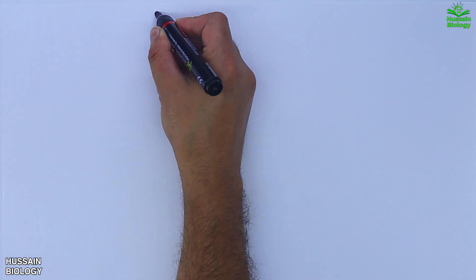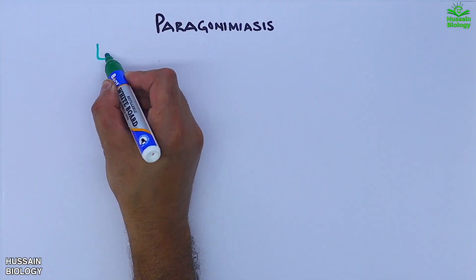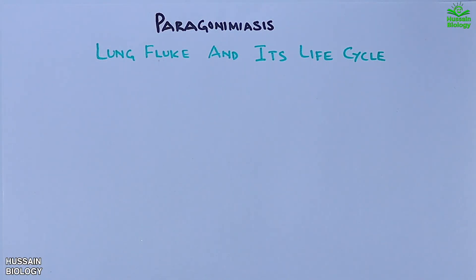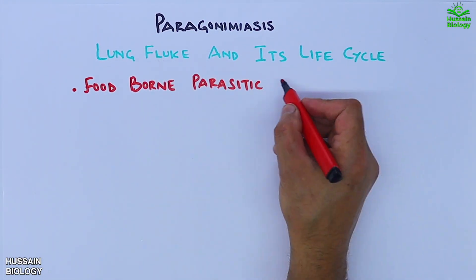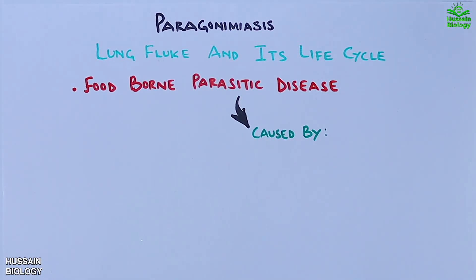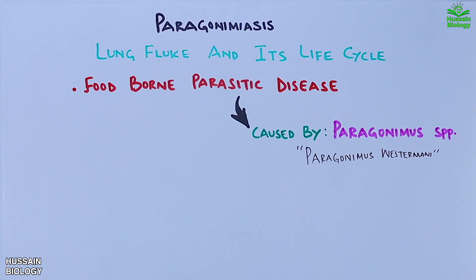In this video we are going to discuss about Paragonomiasis, the lung fluke and its life cycle. Paragonomiasis is a foodborne parasitic disease which is caused by Paragonimus species, like Paragonimus Westermani — also known as the oriental lung fluke.